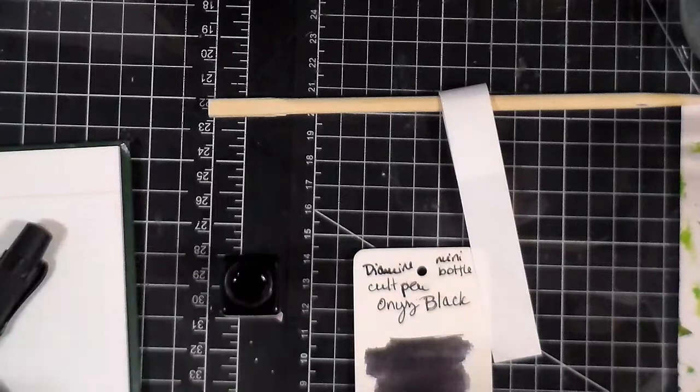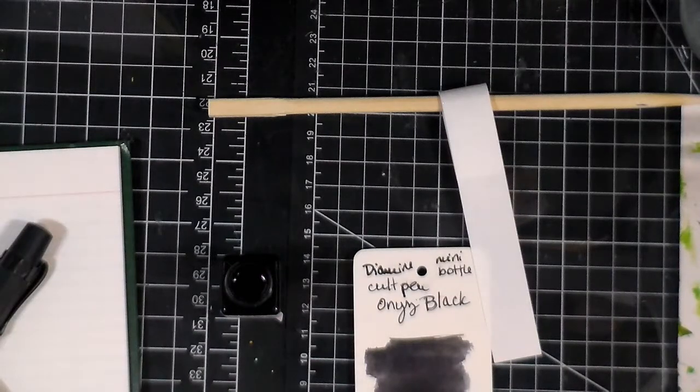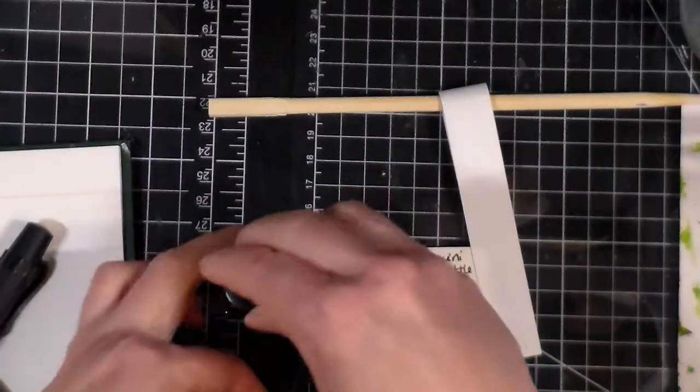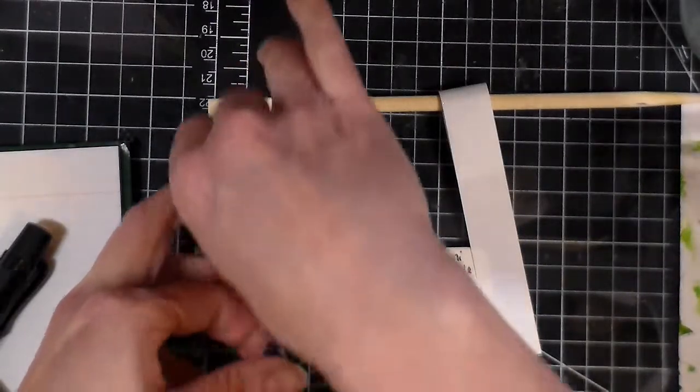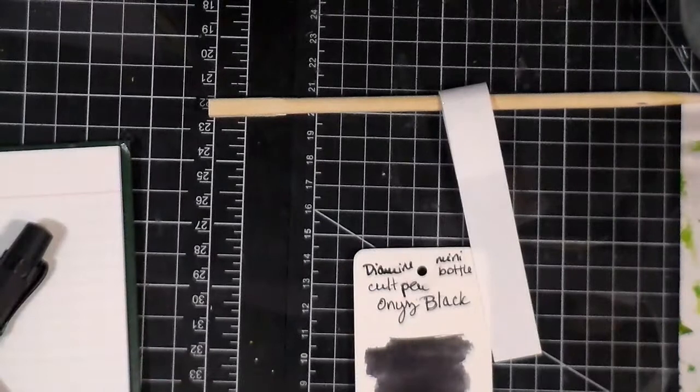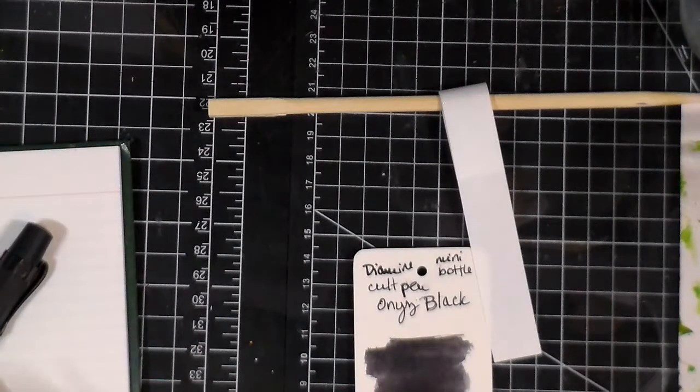I don't use black inks all that much except to write the labels of envelopes and I can't do that with this because it's a water-soluble ink. So if it rains, the address would just run and that would not be cool.